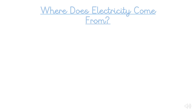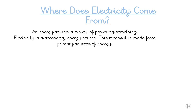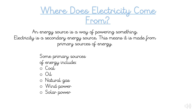You might be asking yourselves: where does electricity come from? An energy source is a way of powering something. Electricity is a secondary energy source, which means it is made from primary sources of energy. Some primary sources of energy include coal, oil, natural gas, wind power and solar power.